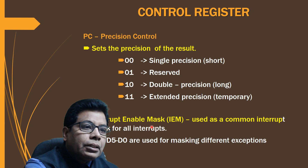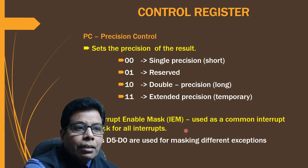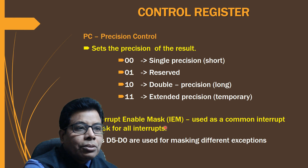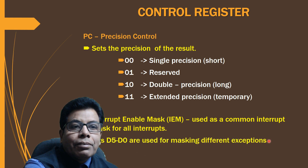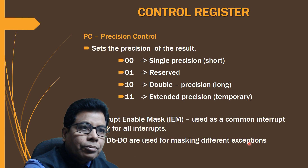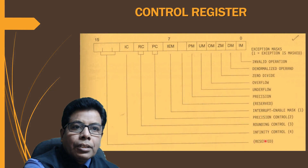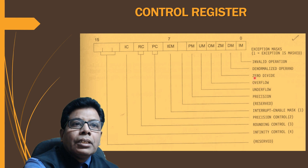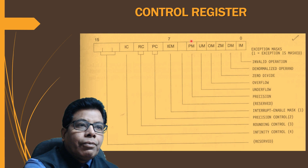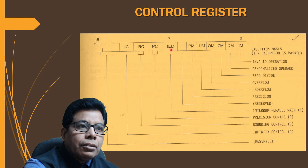IEM (interrupt enable mask) is a common interrupt mask for all interrupts. Setting it to 0 masks all interrupts. Bits d0 to d5 are used for masking different individual exceptions: invalid operation, denormalized operand, zero divide, overflow, underflow, and precision.